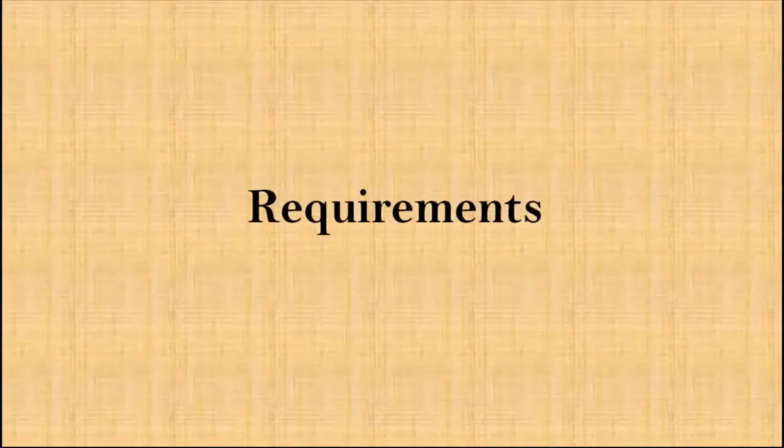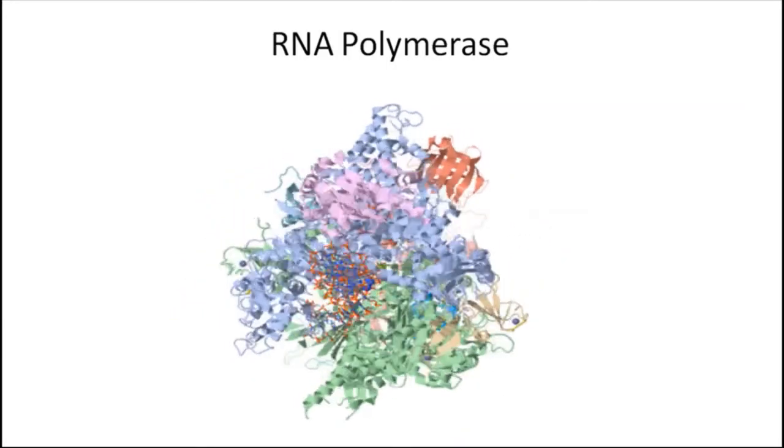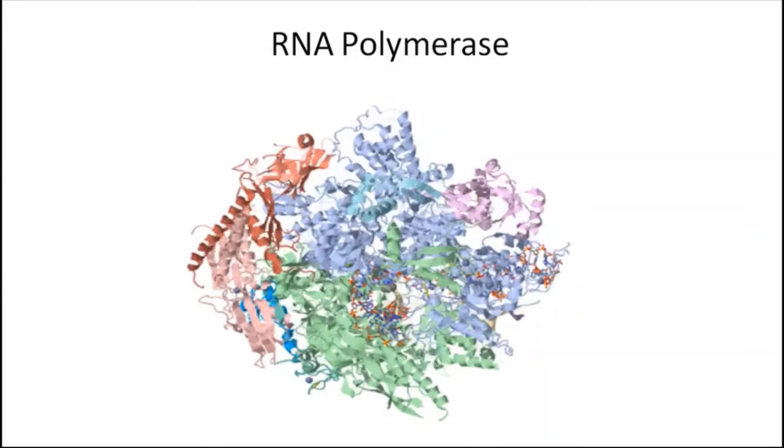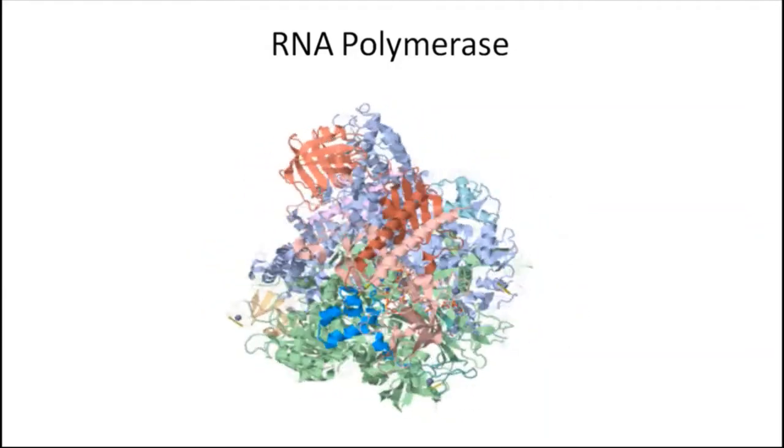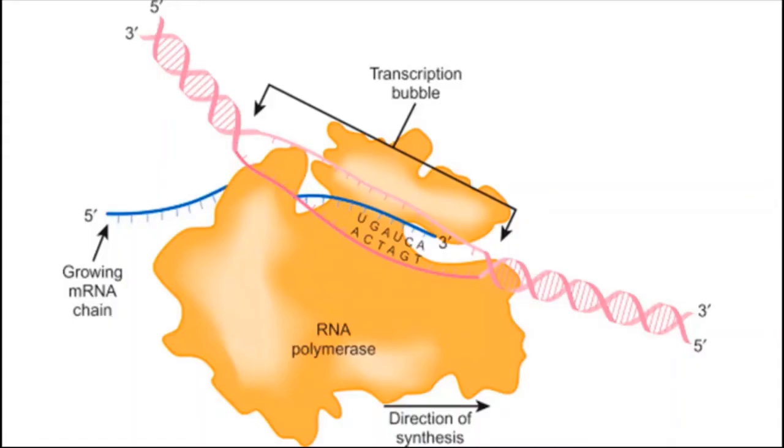RNA polymerase is an enzyme that synthesizes RNA from a DNA template. It opens the double-stranded DNA at specific sites so that one strand of the exposed DNA can be used as a template for the synthesis of RNA.